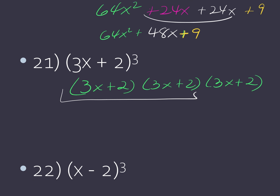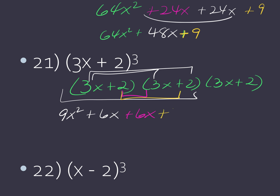So once I go ahead and distribute, I'm going to multiply 3x times 3x, which gives me 9x squared. Then distribute the 3x to the 2 — 6x. Then the inside — 6x. And then finally last — plus 4. So this is my first product, and I'm going to combine this. So now I have 9x squared plus 12x plus 4.